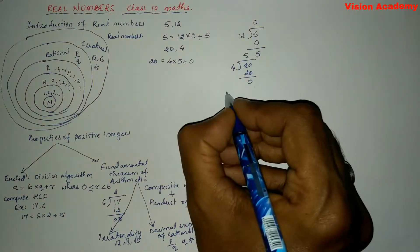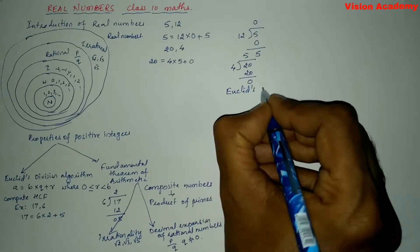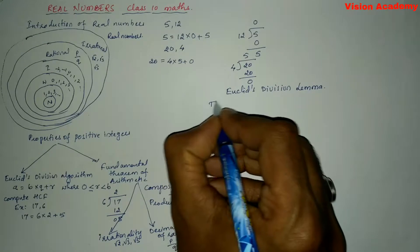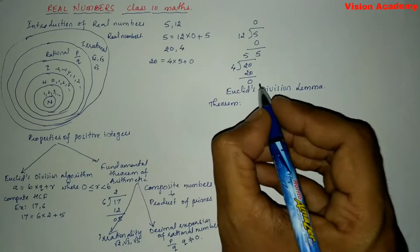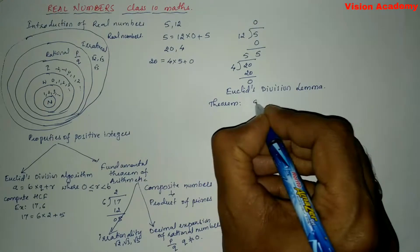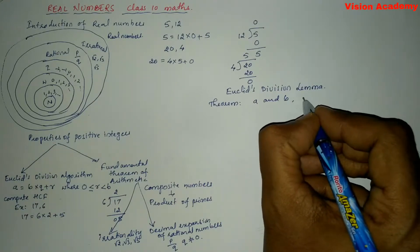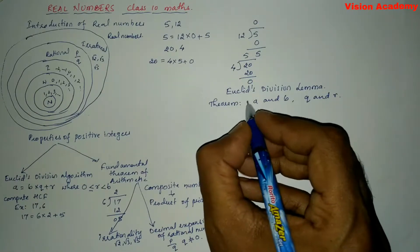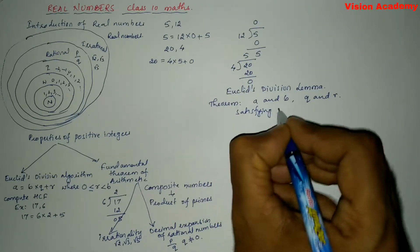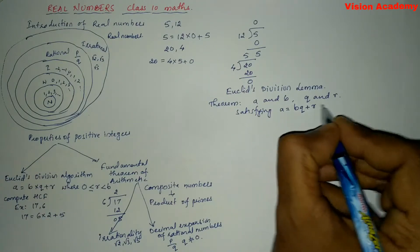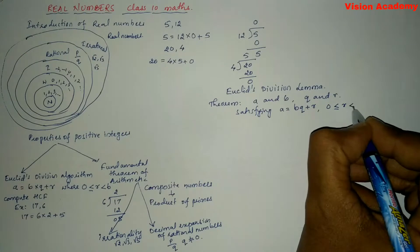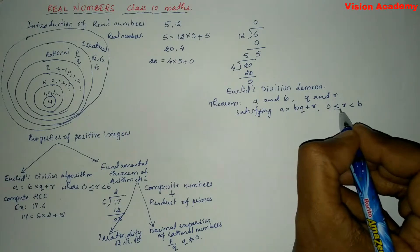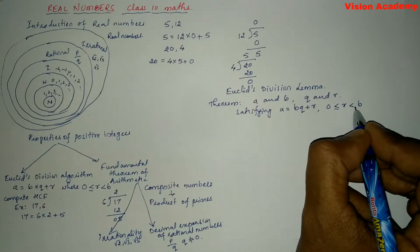Now let us move on to Euclid's division lemma. Euclid's division lemma is essentially the same as Euclid's division algorithm. The theorem states: for positive integers A and B, there exist unique integers Q and R satisfying A = B × Q + R, where 0 ≤ R < B. Here A is the dividend, B is the divisor, Q is the quotient, and R is the remainder. Zero is always less than or equal to R, and R is always less than the divisor.